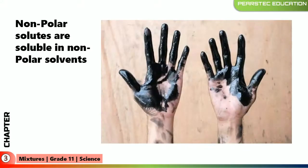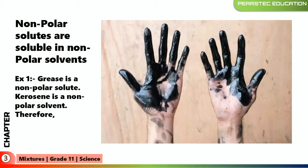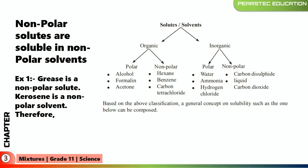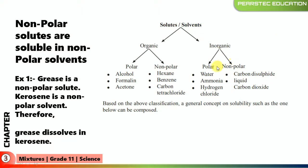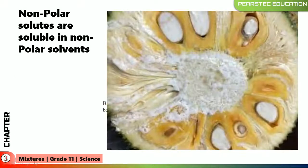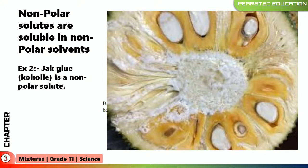Consider grease on a person's hand. Non-polar solutes are soluble in non-polar solvents. Grease is a non-polar solute and kerosene is a non-polar solvent. Therefore, when you have grease on your hand, you cannot simply apply water and wash it away — you need kerosene to wash it off. Grease is a non-polar solute and kerosene is a non-polar solvent, so grease dissolves in kerosene, not in water, because water is polar.